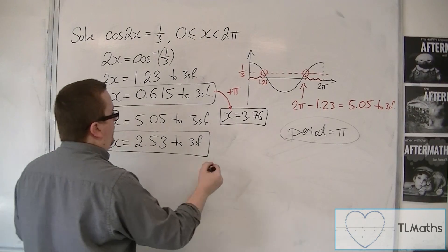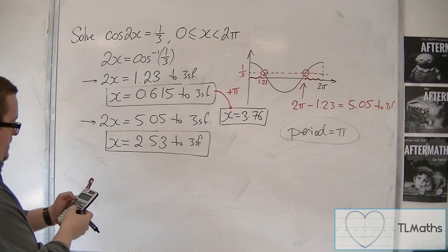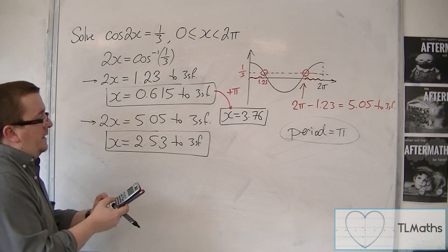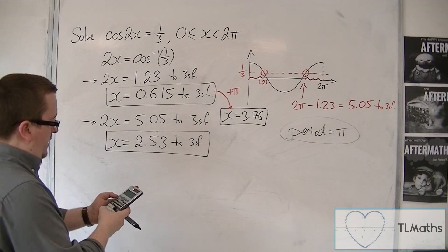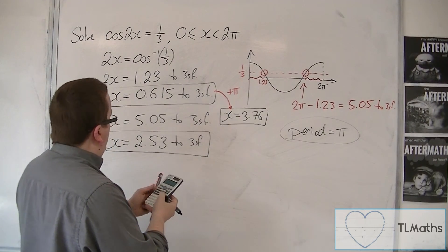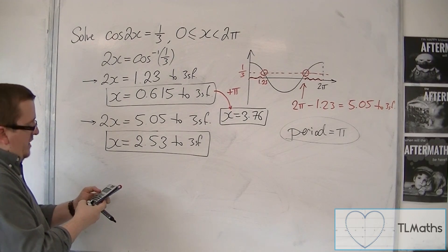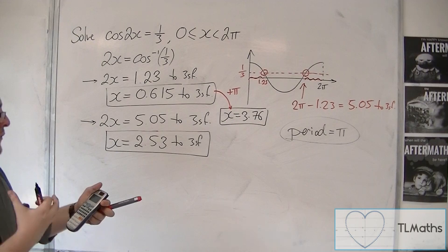And I add pi to this one, so I best actually get that answer back exactly. So inverse cos of 1 third, I took it away from 2 pi, and then I halved it, and then you add pi on.